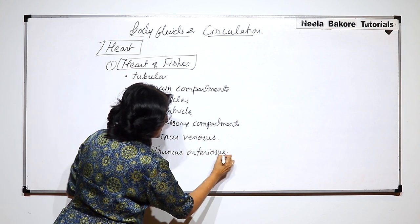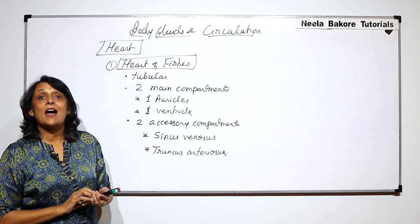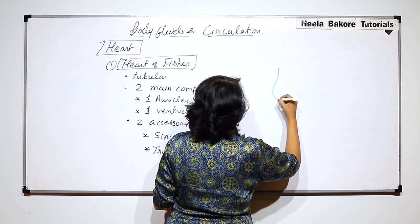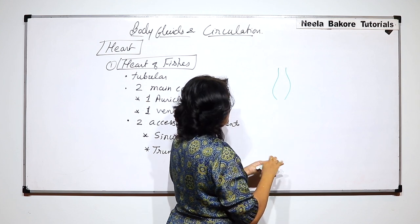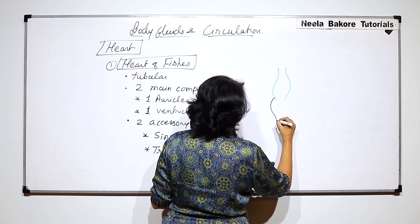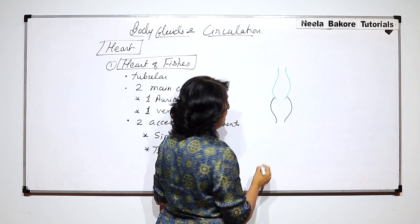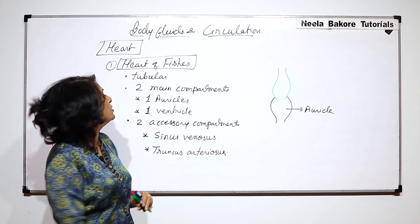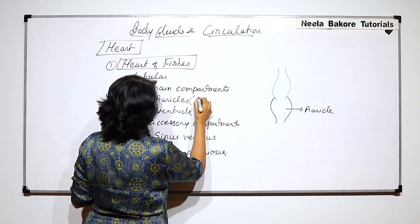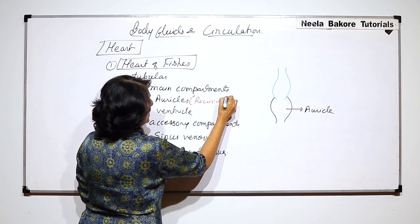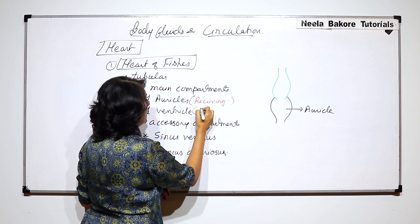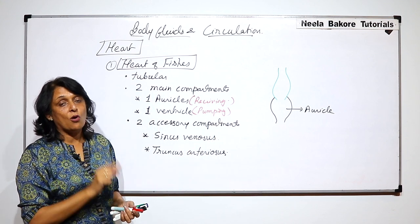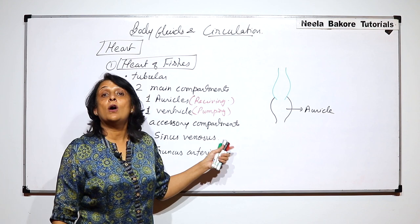Now if we use these structures, if we make fish's heart, then how will it be? Fish's heart is a tubular heart. This is one compartment, and another compartment. This is a tubular heart. This compartment is auricle. And the auricle is always receiving compartment. Auricles are receiving compartments. This means that this will receive blood. And ventricle is always pumping compartment. So if blood comes in heart, it will always come to auricle. And if it comes out from heart, it will always come out from ventricle.